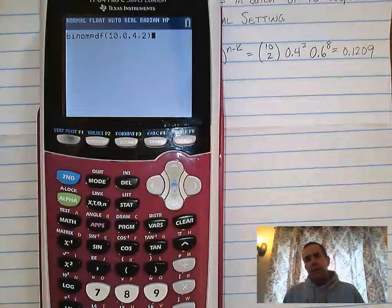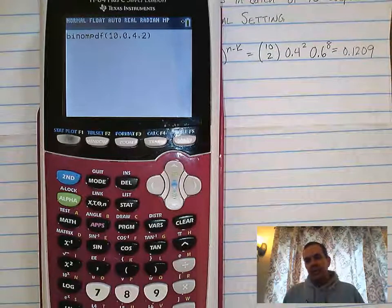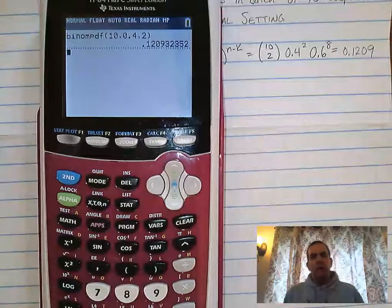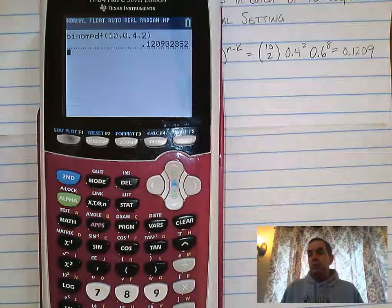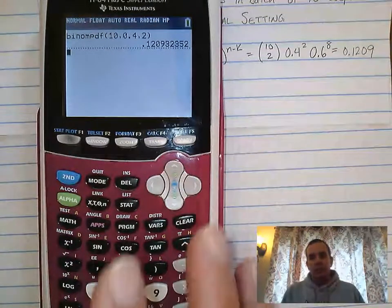We paste that in. We hit enter and it's going to give us the answer. And it gave us 0.120932352. What I would do in this case is I just round it to four decimal points.